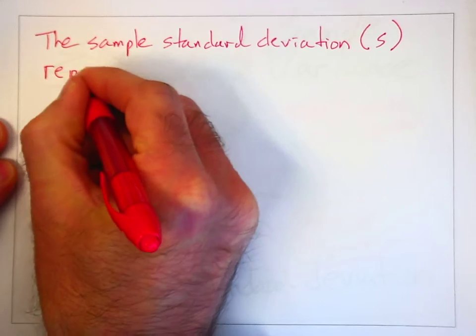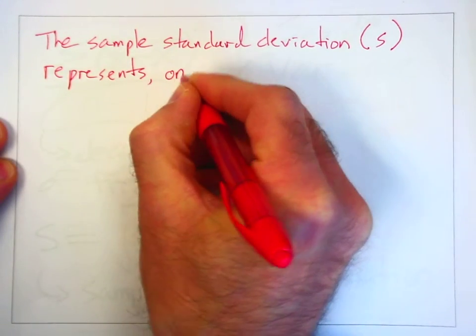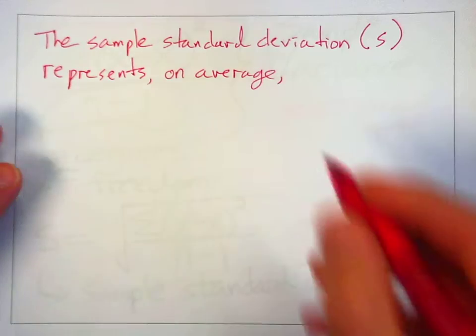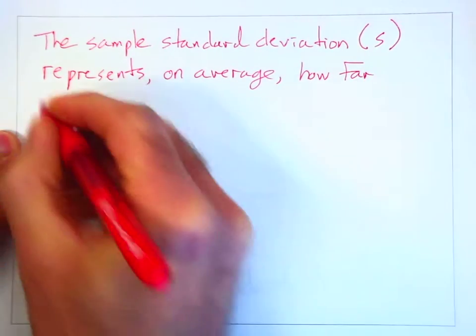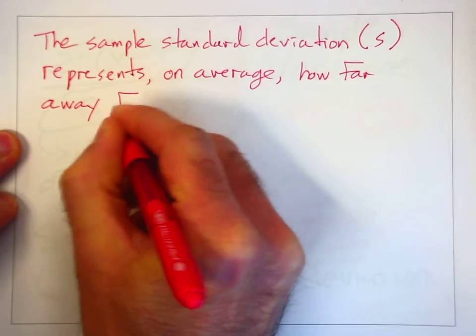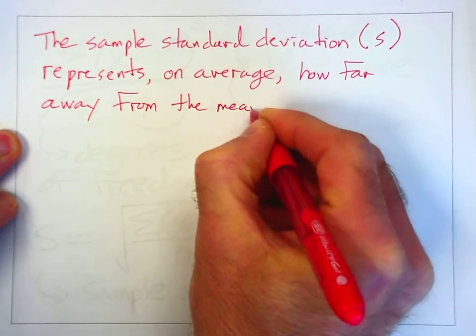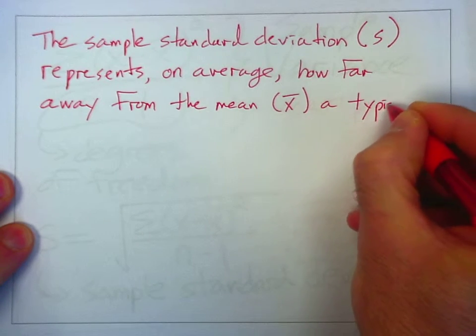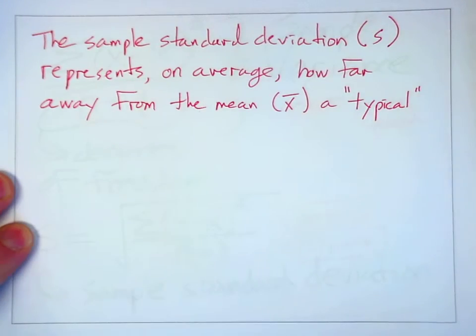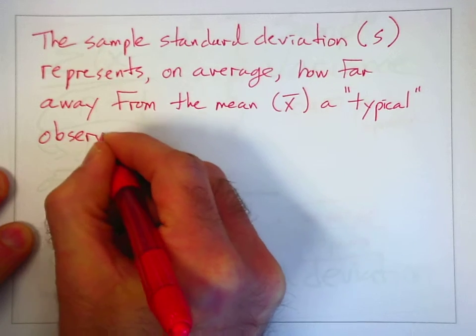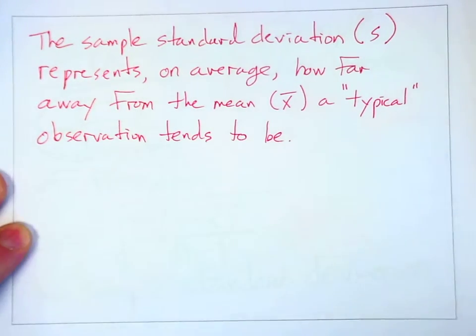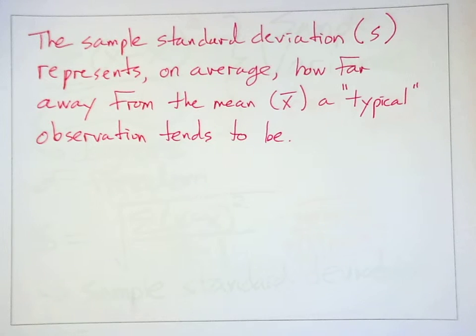how far away from the mean, which is represented with x bar, on average, how far away from the mean a typical observation tends to be. I'll put typical in quotes. This is the intuitive way in which I like to think about what we mean by the sample standard deviation.